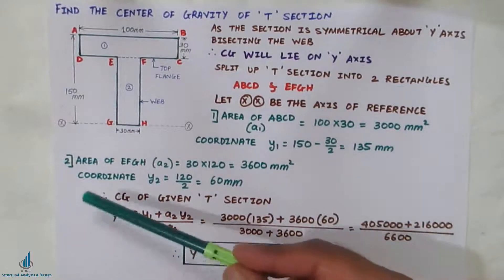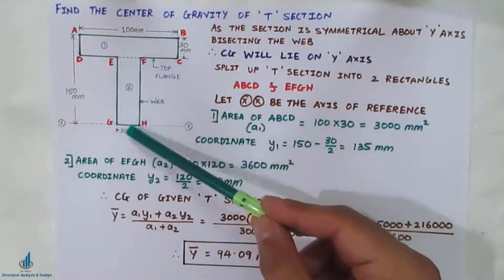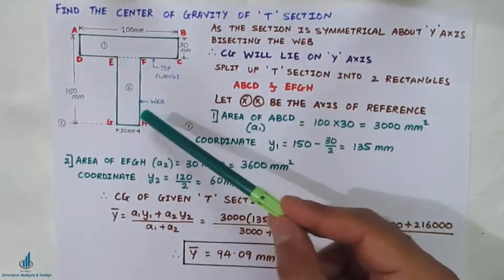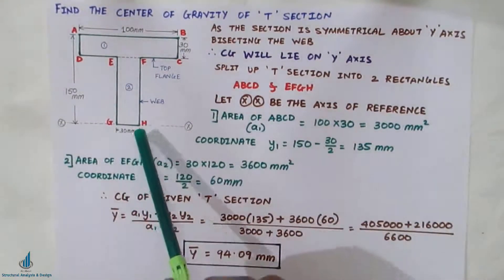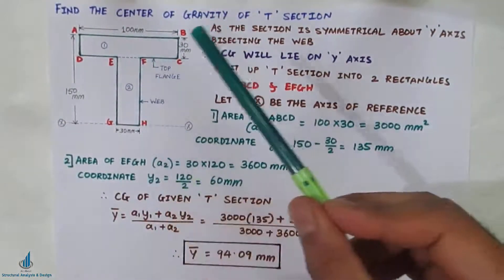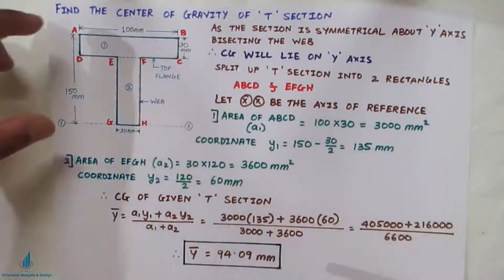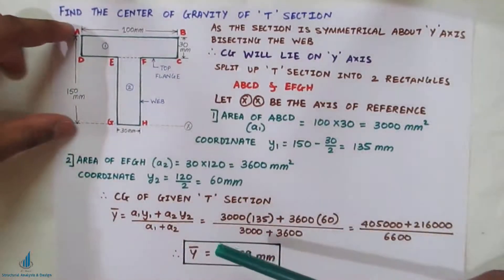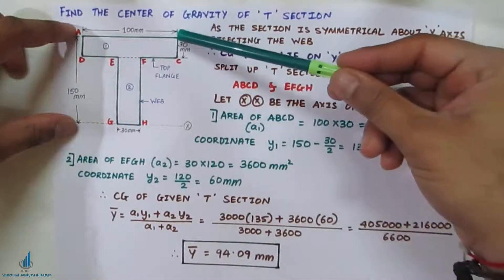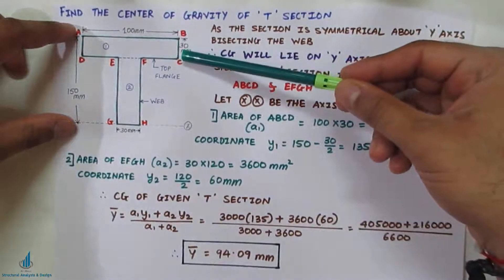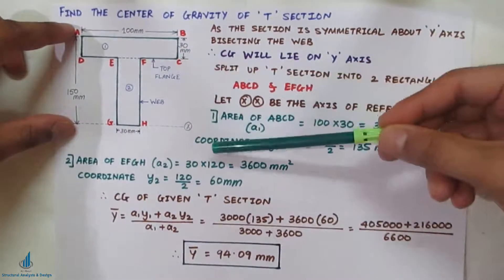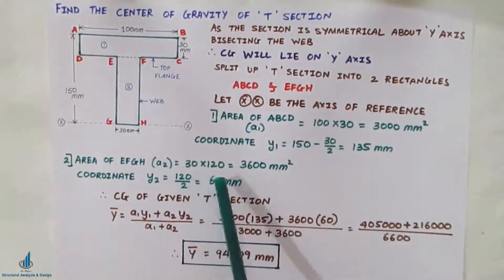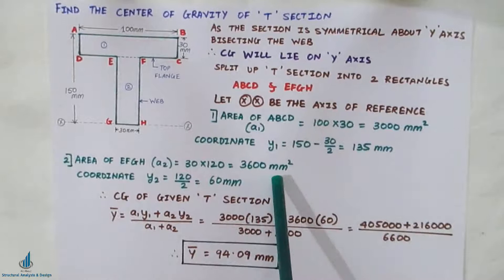The area of web EFGH, denoted as A₂, is 30 mm × 120 mm. The 120 comes from the entire height of 150 minus the depth of the flange, which is 30 mm. So 150 minus 30 equals 120 mm. Therefore, A₂ = 30 × 120 = 3600 mm².